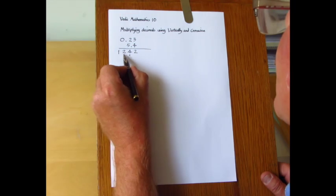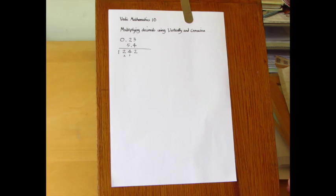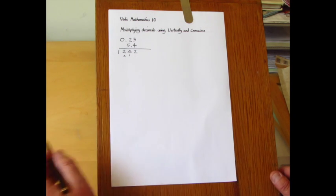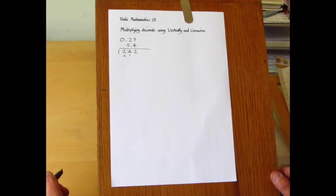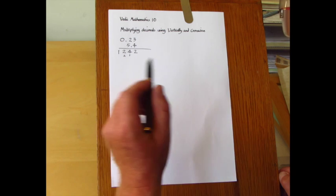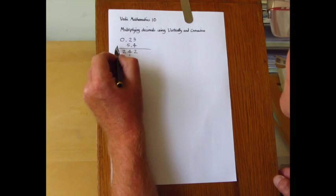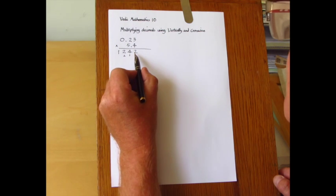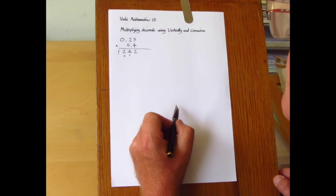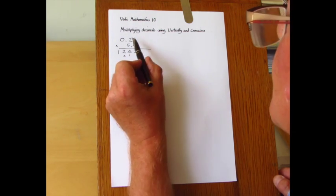So we've got these answer digits 1, 2, 4, 2, and then we have to find out where the decimal point goes. Well, the easiest way is to remember this rule: that the total number of decimal digits in the two numbers to be multiplied is equal to the number of decimal digits in the answer.